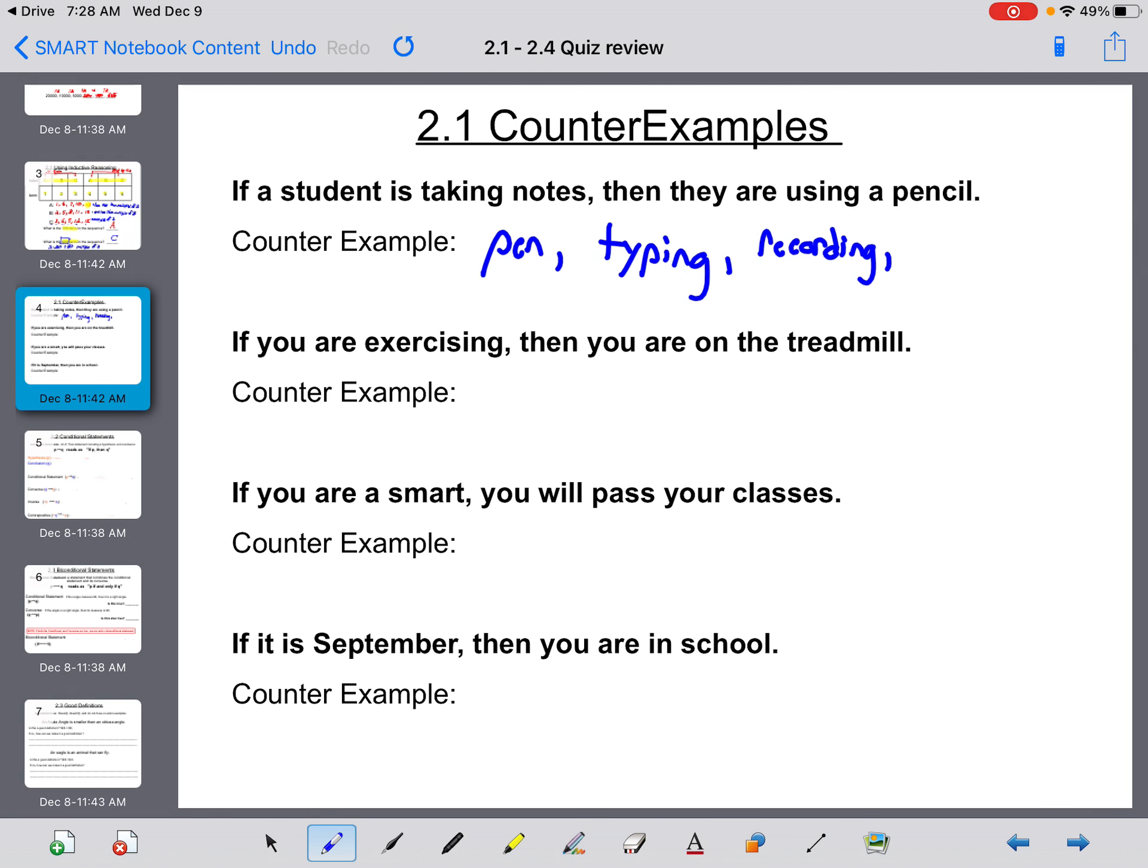If you are exercising, then you are on the treadmill. Well, you don't have to be on the treadmill to exercise. You could be biking, you could be running outside, you could be lifting weights. If you are smart, you will pass your classes. Well, that's not necessarily true either. Just because you're smart doesn't mean that you completed your work. You could have incomplete assignments, you could have poor attendance.